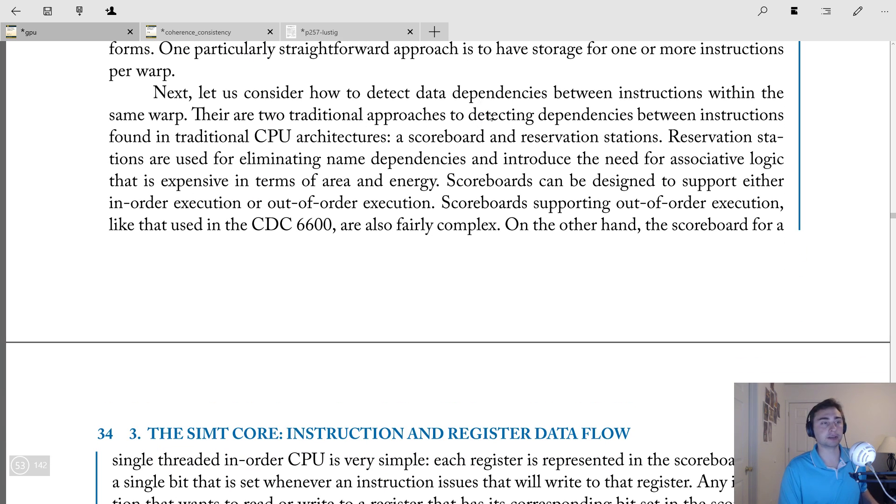So now let's consider the idea of what we're really talking about here is detecting data dependencies. Now, classically in CPUs, there's two main approaches, which is this idea of having a scoreboard or reservation stations. So with reservation stations, we use these to eliminate name dependencies. But this introduces the need for associative logic that's expensive in terms of area and energy. Now, the reason why this is a problem is because when we're talking about GPUs, we're talking about these giant, massively multithreaded things. And the design kind of pattern for these things is keep things simple, because we just want to tape out as much compute as we can, we care about the number of ALUs that we have. So once we start adding these very expensive and complex structures, we're really decreasing the amount of space we have for the raw compute.